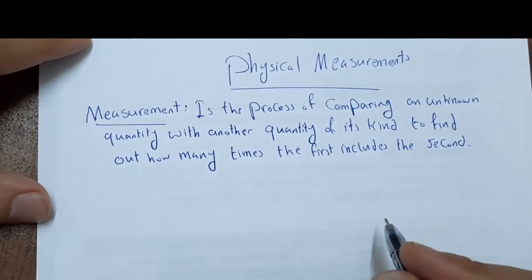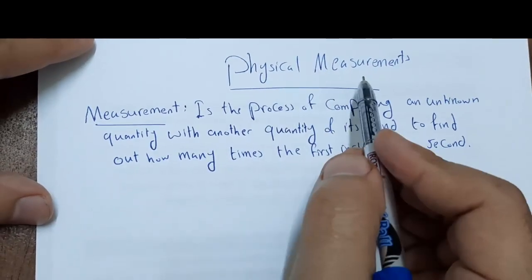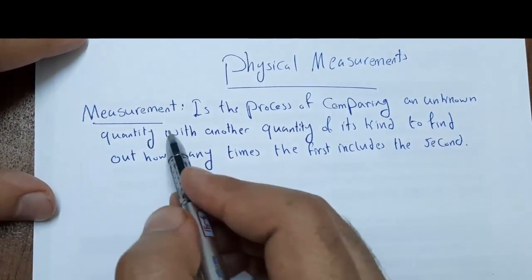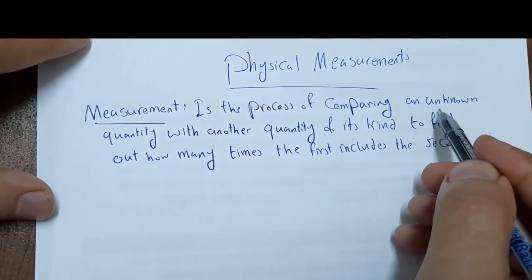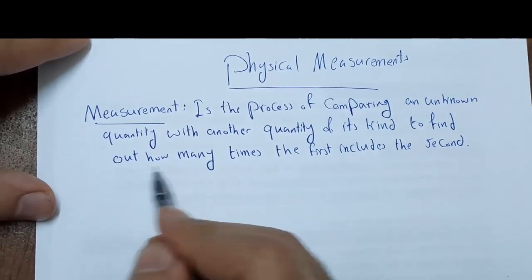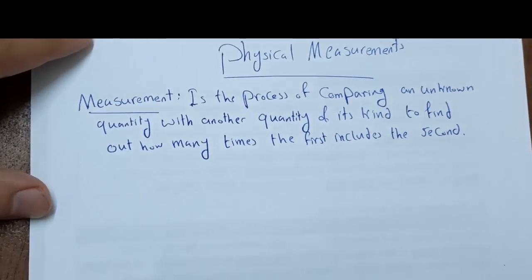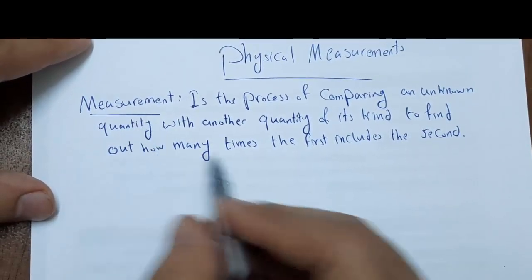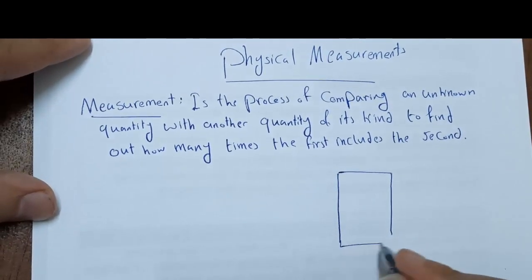Welcome everybody. In this video we will talk about physical measurements. What exactly is measurement? Measurement is a process of comparing a known quantity with another of its kind to find out how many times the first includes the second.